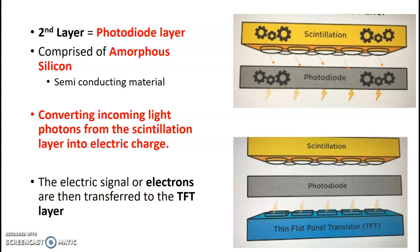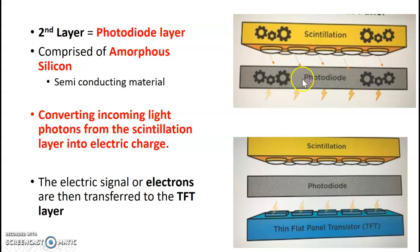The second layer is a photodiode layer. In indirect conversion, we use amorphous silicon — remember: I for indirect, I in silicon. It's a semiconducting material. It takes the light photons from the scintillator and turns them into electric charge. The electrical signal, or electrons, are then transferred to your TFT.